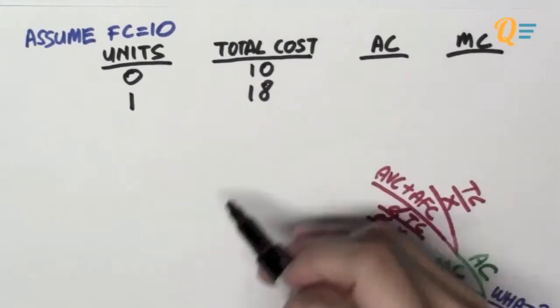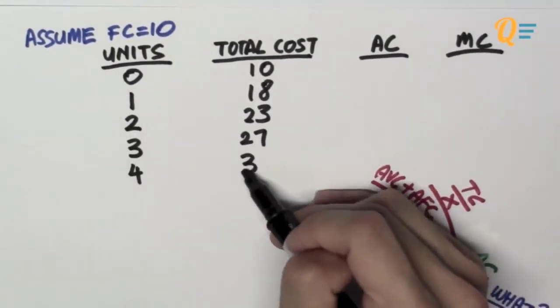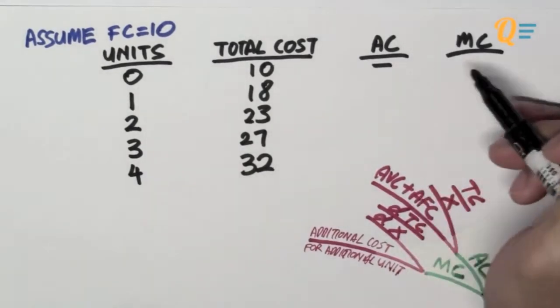So let's imagine that when you produce 1 unit, it's going to cost 18. When you produce 2, it's going to cost 23, so on and so forth until 4 units. So there's going to be no average cost when you produce 0 units because to find the average cost, you need to take 10 divided by 0. Well, you can't take 10 divided by 0 because that's going to give you a number that's infinity. So we're just going to ignore that for the moment.